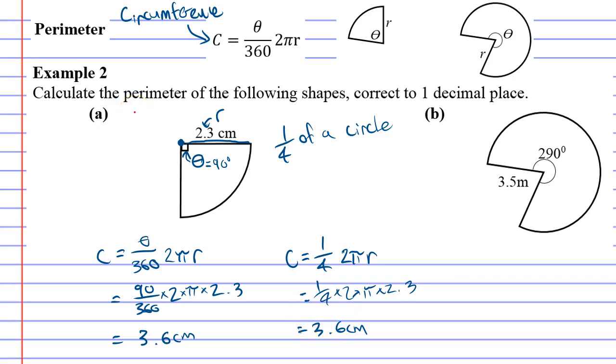Now, really important: you haven't solved the whole question yet. The reason is that circumference only finds the perimeter of the curved section. Looking at this shape, I've only found the perimeter of this part—this part is 3.6 centimeters—but I haven't found the perimeter around the whole shape.